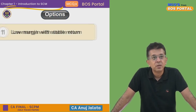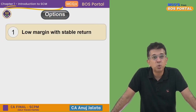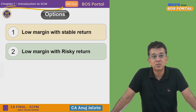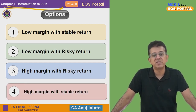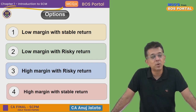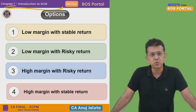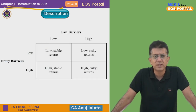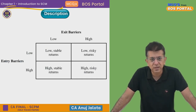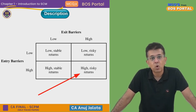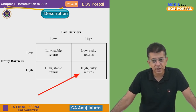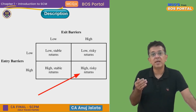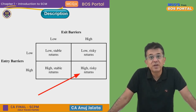The options are: low margins with stable returns, low margins with risky returns, high margins with risky returns, or high margins with stable returns. To answer this, I'll refer to a matrix. High entry barriers and high exit barriers fall in the bottom-right of the matrix. At that point, returns will be high because very few players are in the market, allowing everyone to charge premiums.